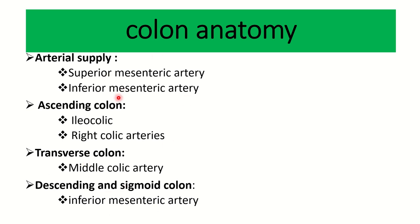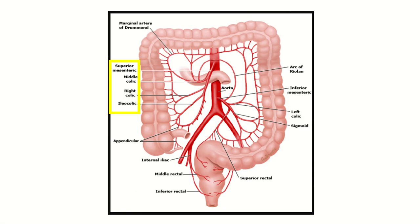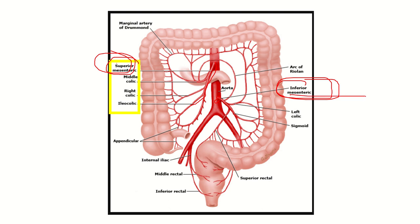Here we can see the whole colon, and you can see the abdominal aorta. From the abdominal aorta, two important arteries arise and supply the whole colon. The first is the superior mesenteric artery, which arises and supplies part of the colon. The other branch is the inferior mesenteric artery. Together, the superior mesenteric artery and inferior mesenteric artery supply all of the colon.